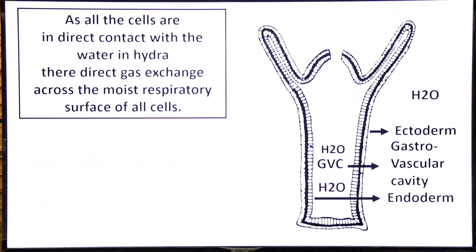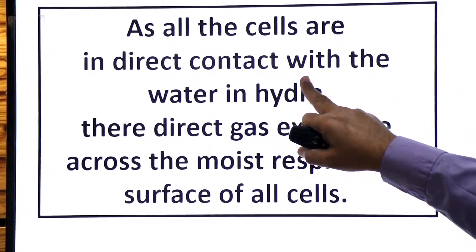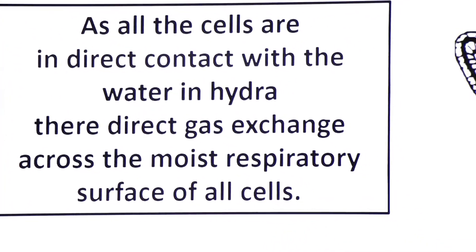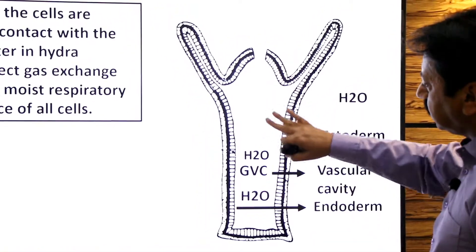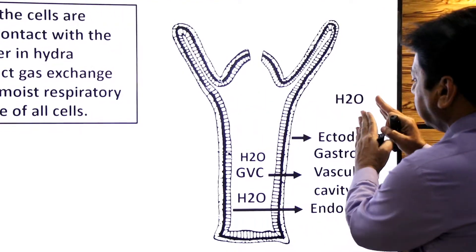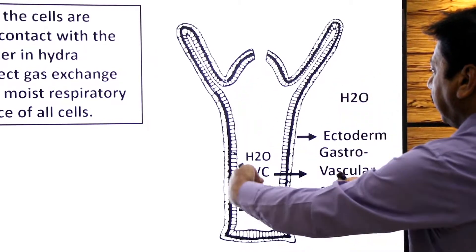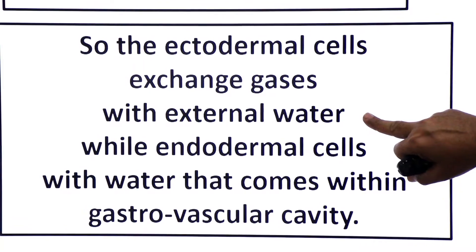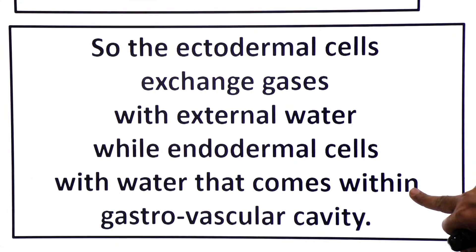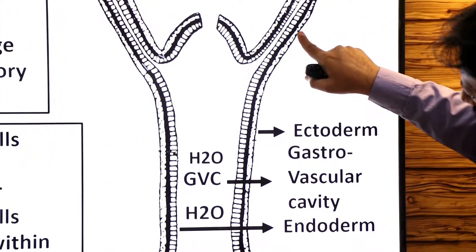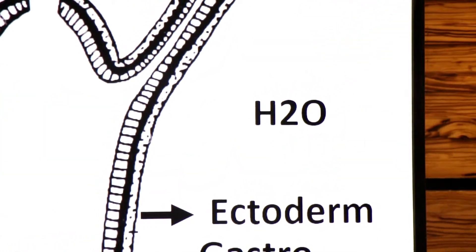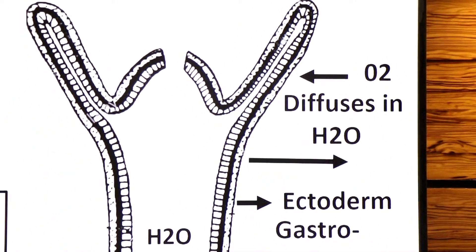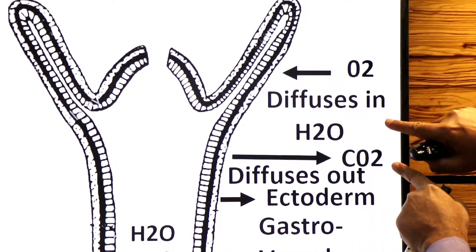Since all cells are in direct contact with water, there is direct gas exchange across the moist respiratory surface of all cells. The body surface cells — whether ectodermal or endodermal — remain moist. The ectodermal cells exchange gases with the external water: oxygen diffuses into the ectodermal cells while carbon dioxide diffuses out, both by the process of diffusion.